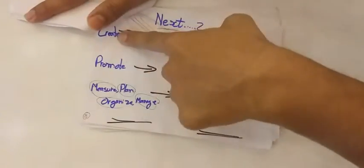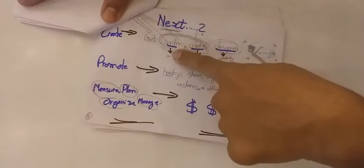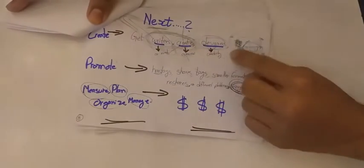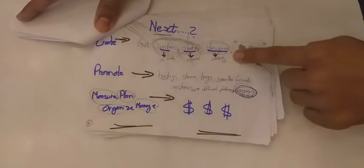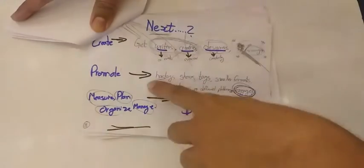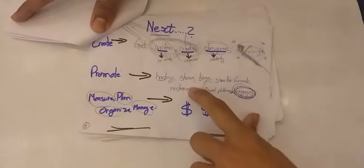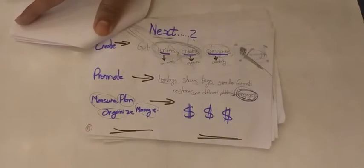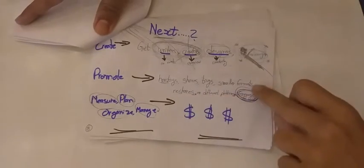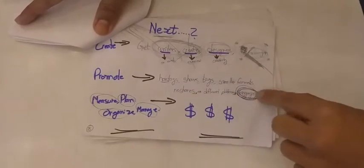Next, what is next? We first create content. Who will create? We will need writers. We will need visualizers or content creators and then we will need graphic designers to add creativity to whatever content has been created. How do we promote it? We have hashtags, shares. We tag people. We do smaller formats of whatever content we are doing. We do reshares on different platforms and yes, engage.